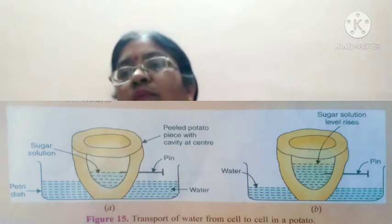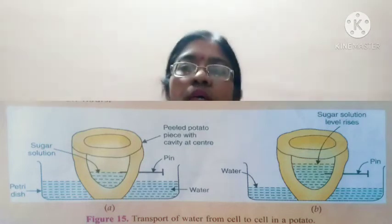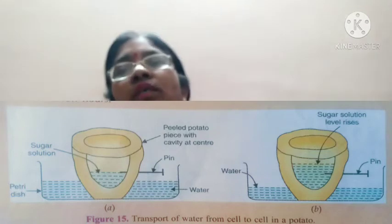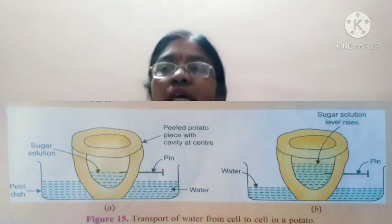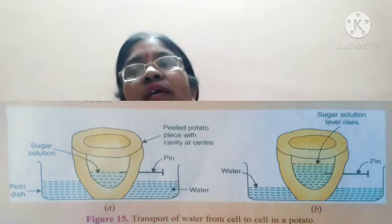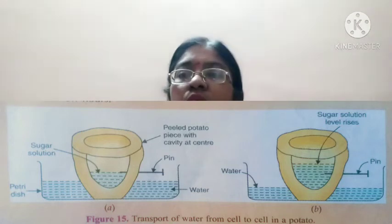In the hollow cup of the potato, we put some sugar solution, then place the potato piece in a container with water filled below the level of the potato cup so that it will not sink. After some time, we mark the level of that sugar solution. After waiting, we observe that the level of the sugar solution has risen due to the process of osmosis.